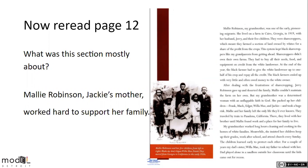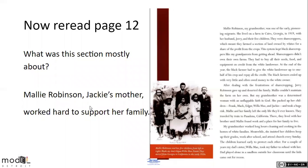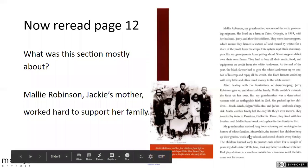Then I'm going to have you reread page 12. What was this section mostly about? If you remember, it's all about Malie Robinson — Jackie's grandmother — and how she worked hard to support her family, and all the things that she did to support the family.